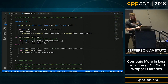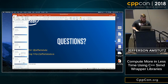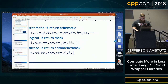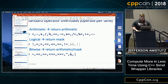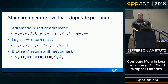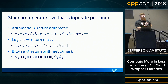Another audience question about why the short-circuit logical operators (&&, ||) are not provided in the library. They are implementable, but overloading them loses short-circuit evaluation semantics, which don't apply to SIMD masks.